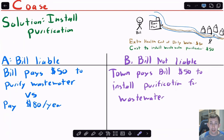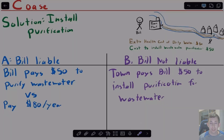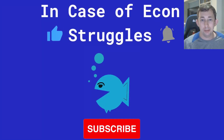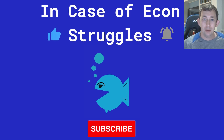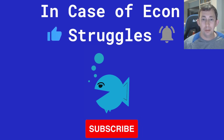The big takeaway is that either way — no matter who has the property rights, no matter if someone is liable or not — we should still get to the same efficient solution where the water purification gets installed. If you have questions or a specific problem you want me to work through, feel free to put that in the comment section below. If these videos are helping you out, please like and subscribe, and we'll see you next time for another case of econ struggles.